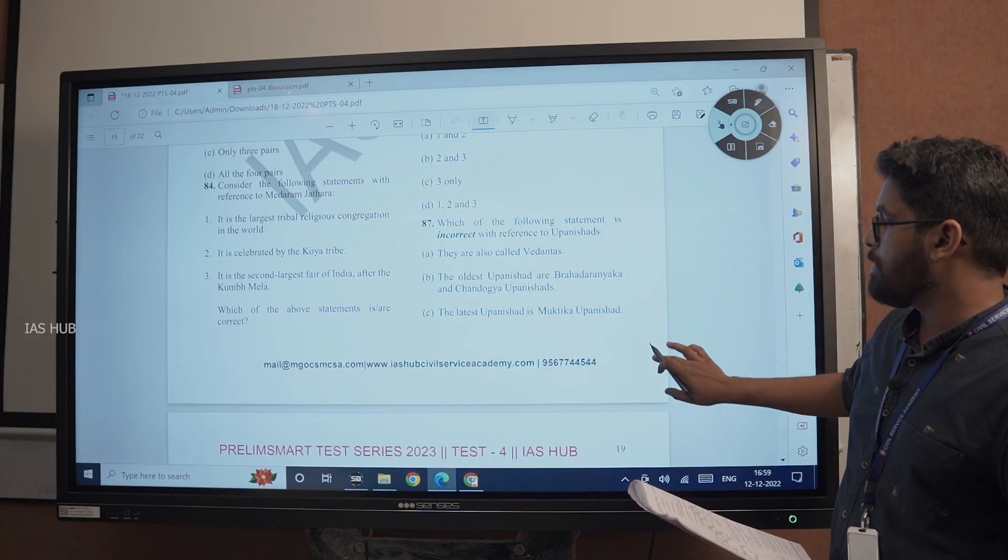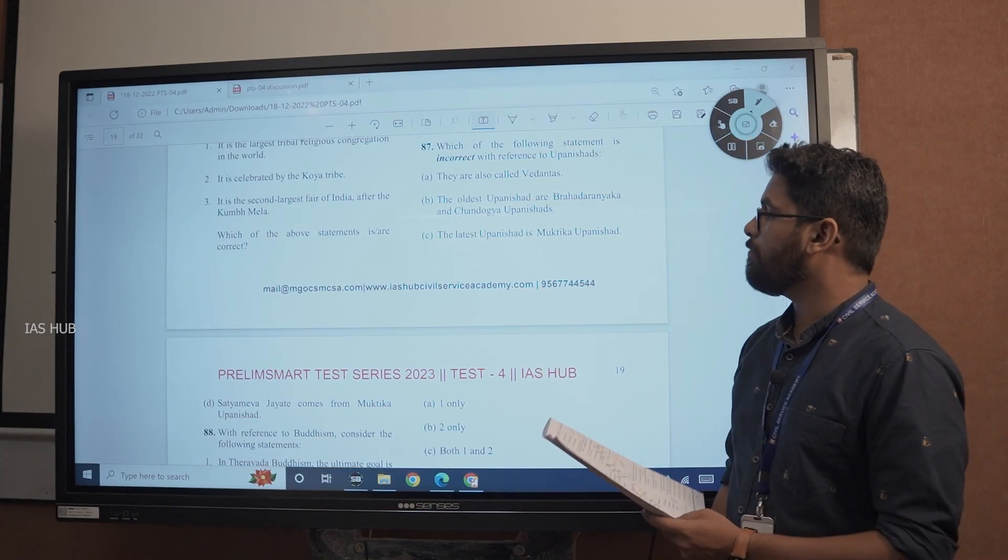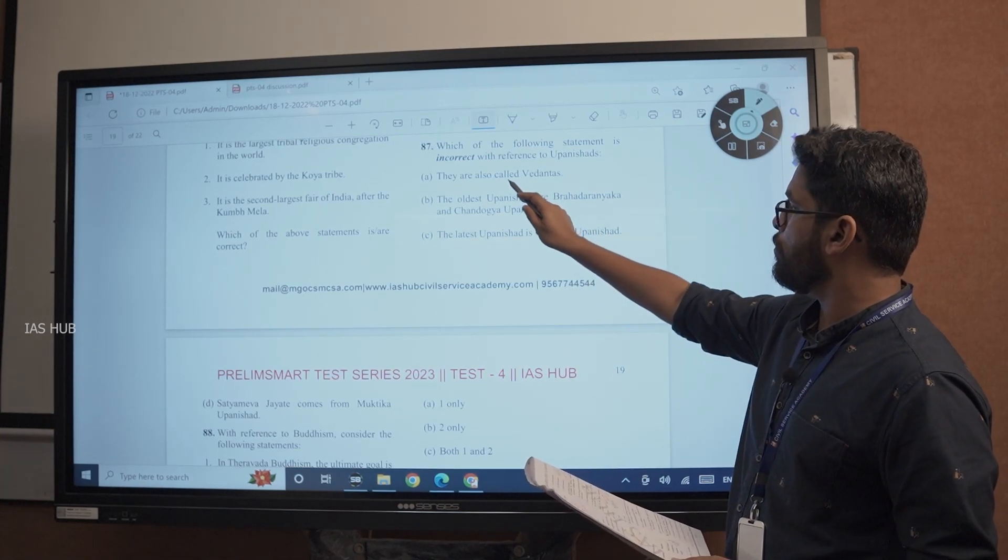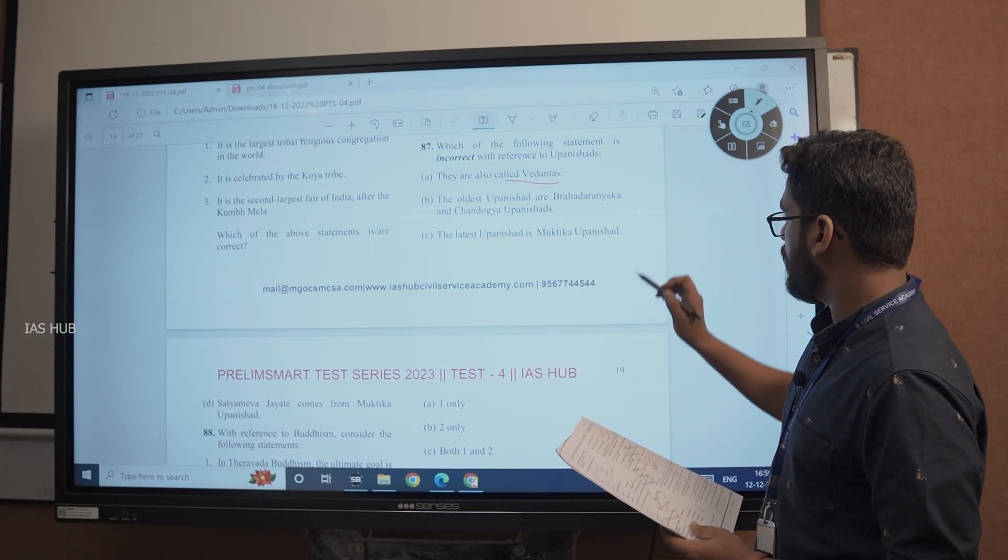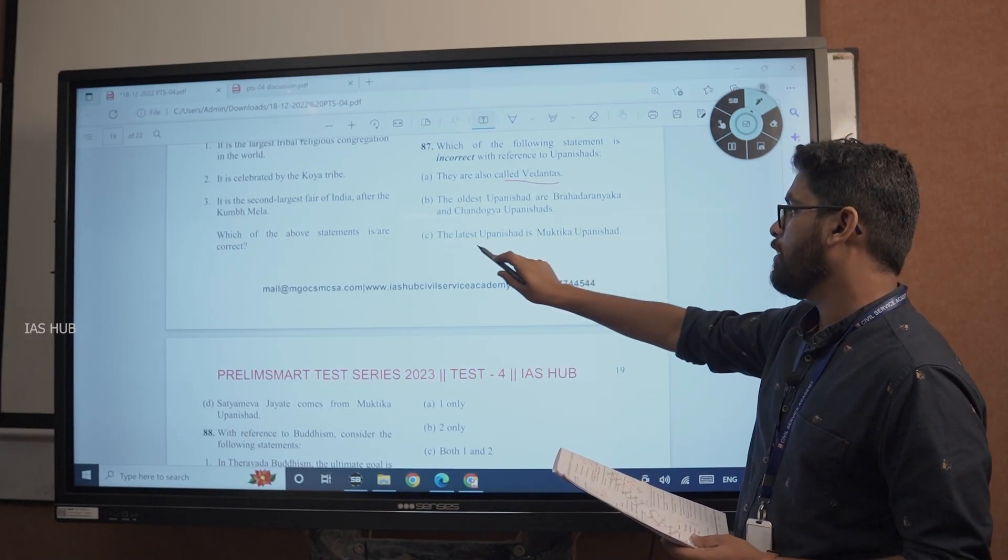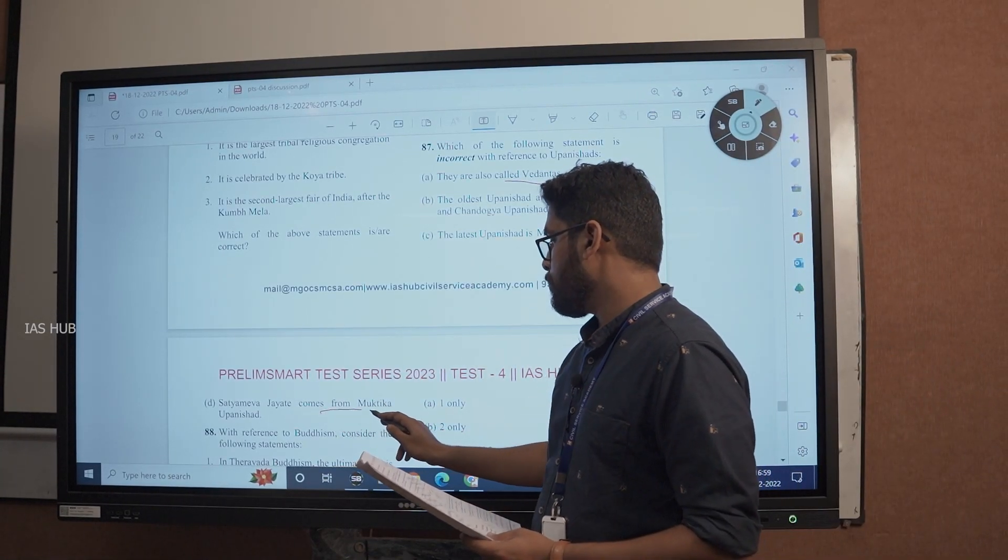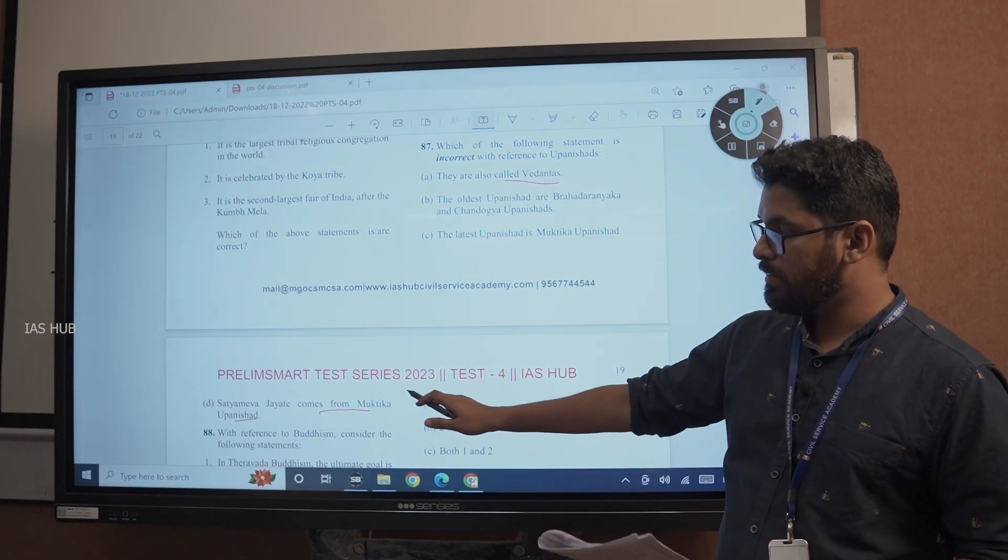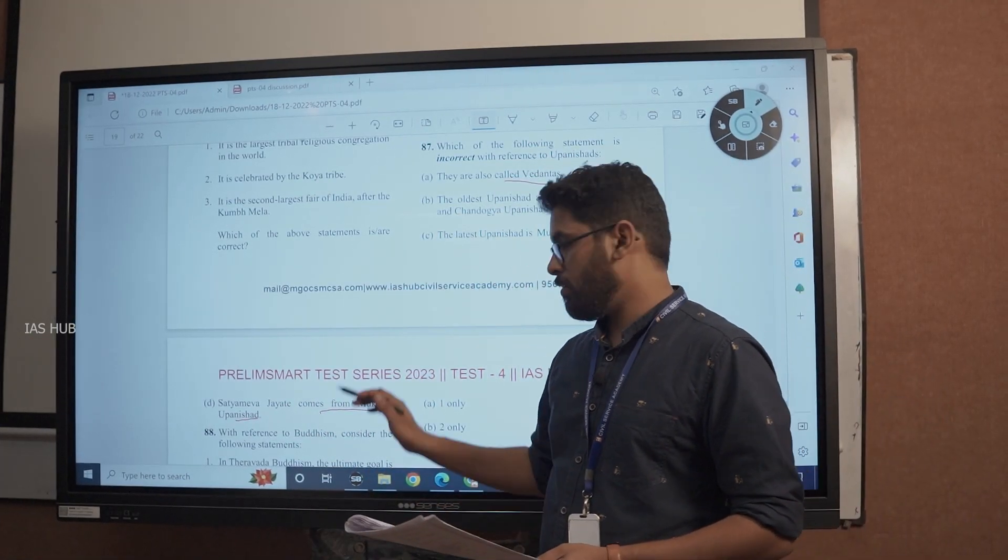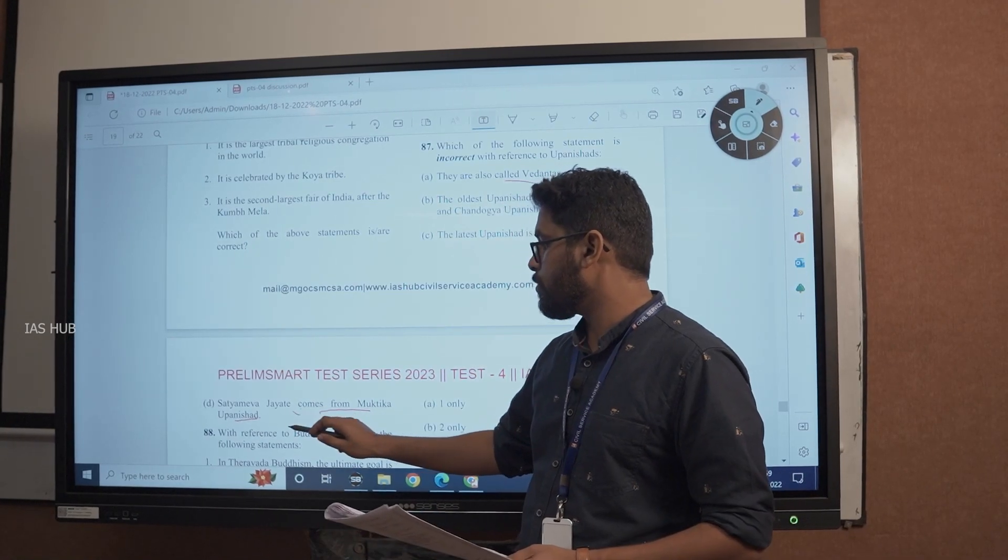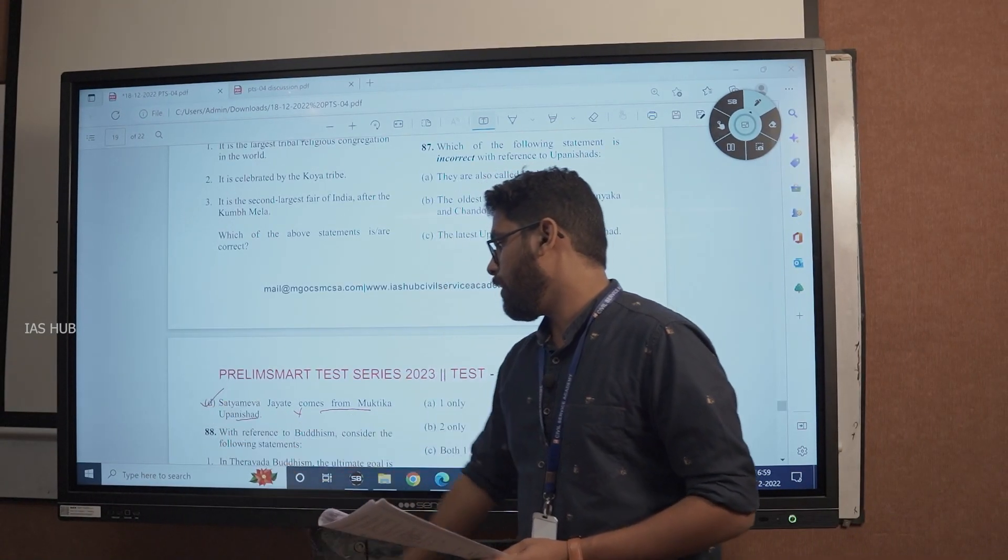Which of the following statements is incorrect with reference to Upanishads? They are also called Vedantas, that is correct. The oldest Upanishads are Brihadaranyaka and Chandogya Upanishad. The latest Upanishad is Muktika Upanishad. Satyameva Jayate comes from Muktika. This is a very basic thing. You should know this Satyameva Jayate comes from Mundaka Upanishad. So this statement is wrong and we are asked which of the following statements is incorrect. So answer is D.